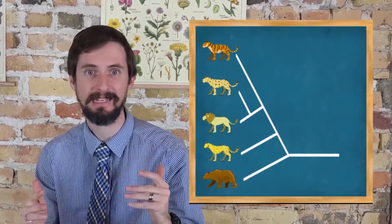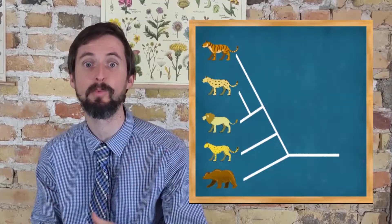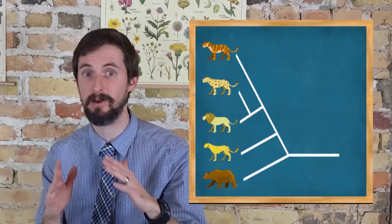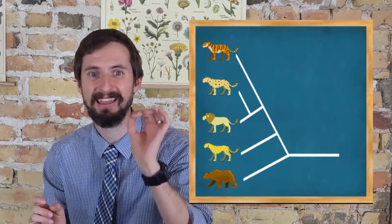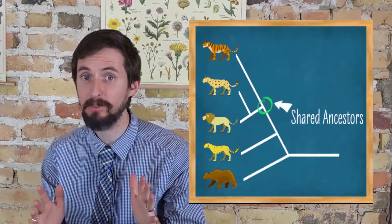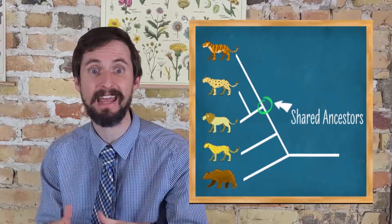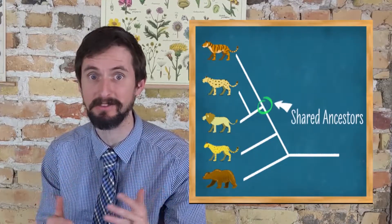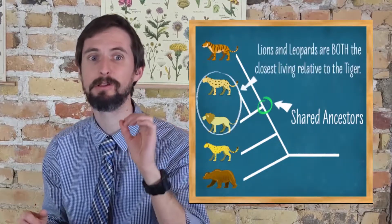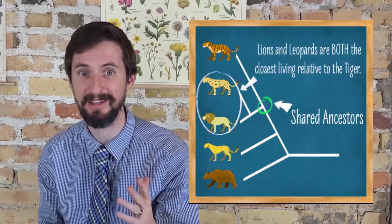In this case, the last time that tigers share ancestors with any other living organisms on this phylogeny was at this node. It shared those ancestors with both lions and leopards. Therefore lions and leopards are both the closest living relatives to the tiger.